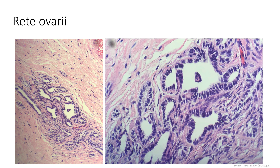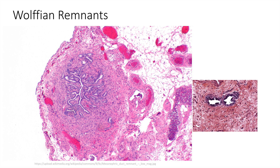These are rete ovarii, which are analogs of the rete testis and are present in the hilum of the ovary. They consist of a network of irregular clefts, tubules, and cysts with flat to cuboidal to columnar lining. These are Wolffian remnants, also known as mesonephric duct remnants. These are usually a small duct or clustered glands around a small duct. They have scant cytoplasm and no cilia, and the lumina can contain secretions which are usually bright pink.